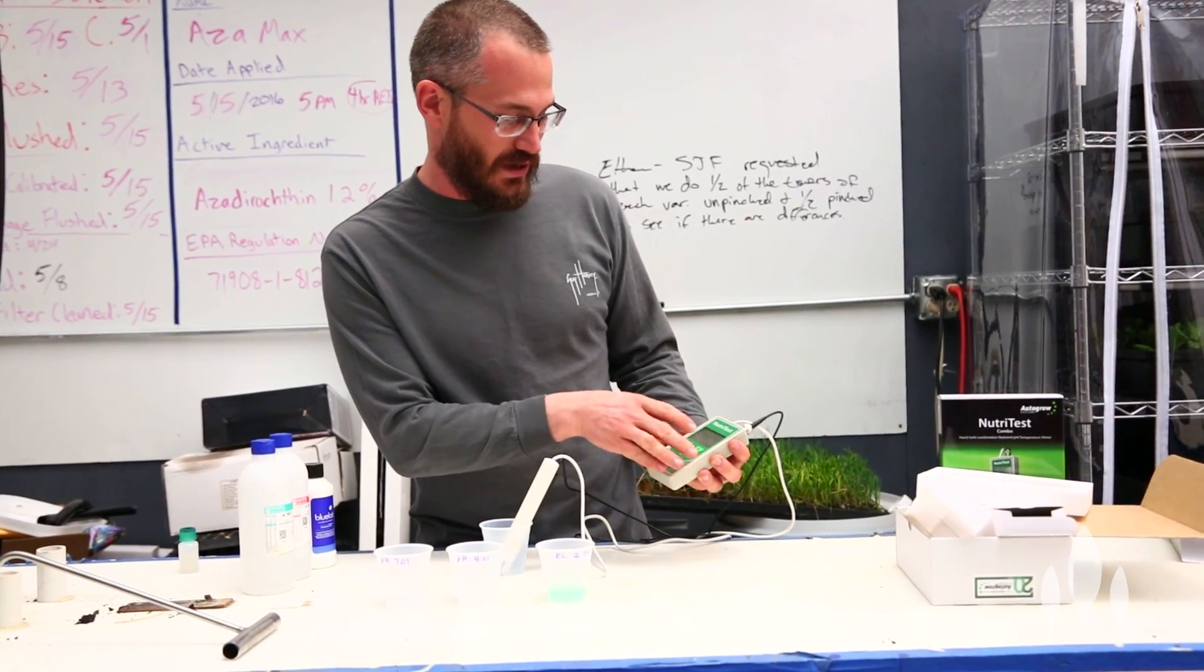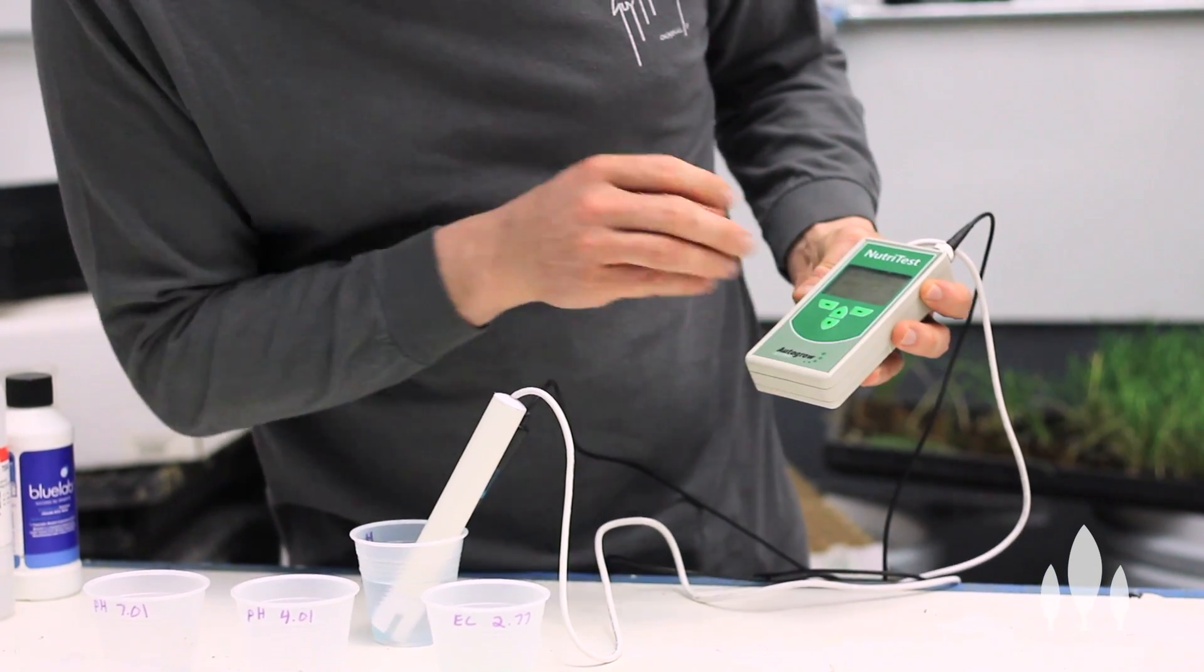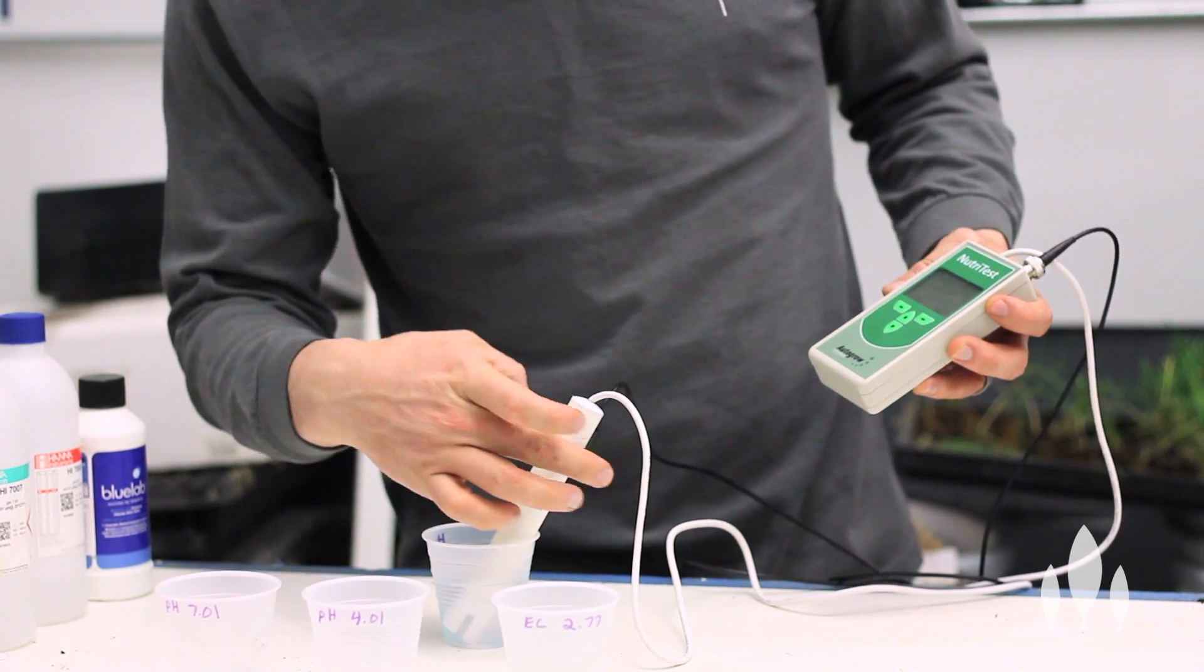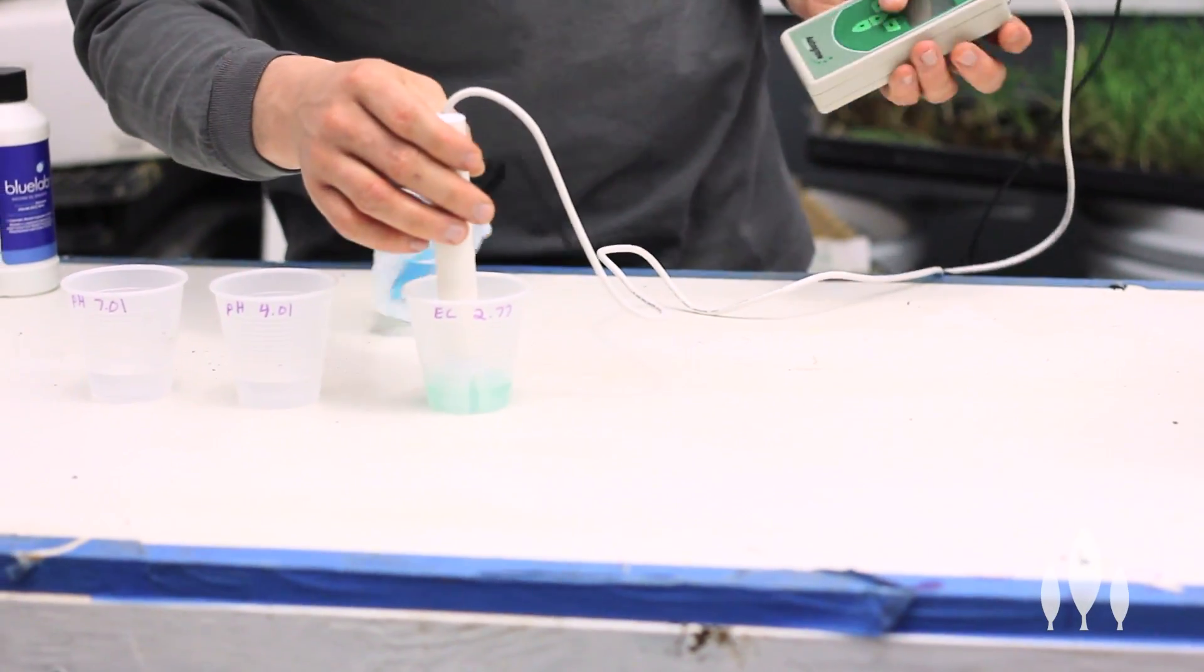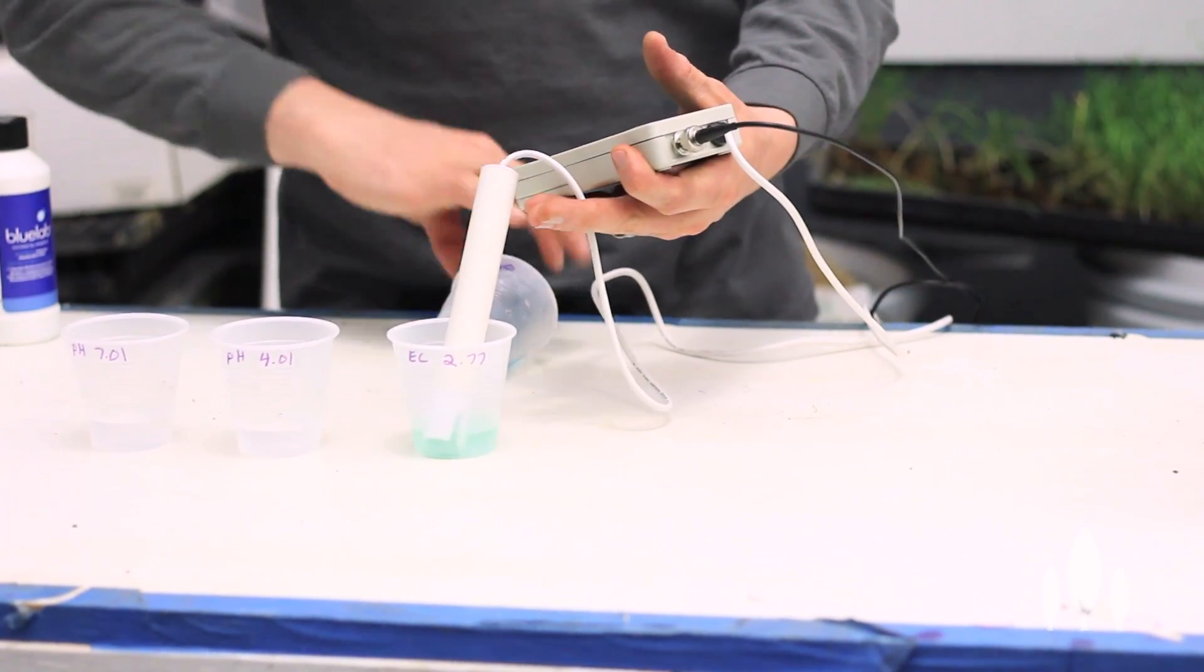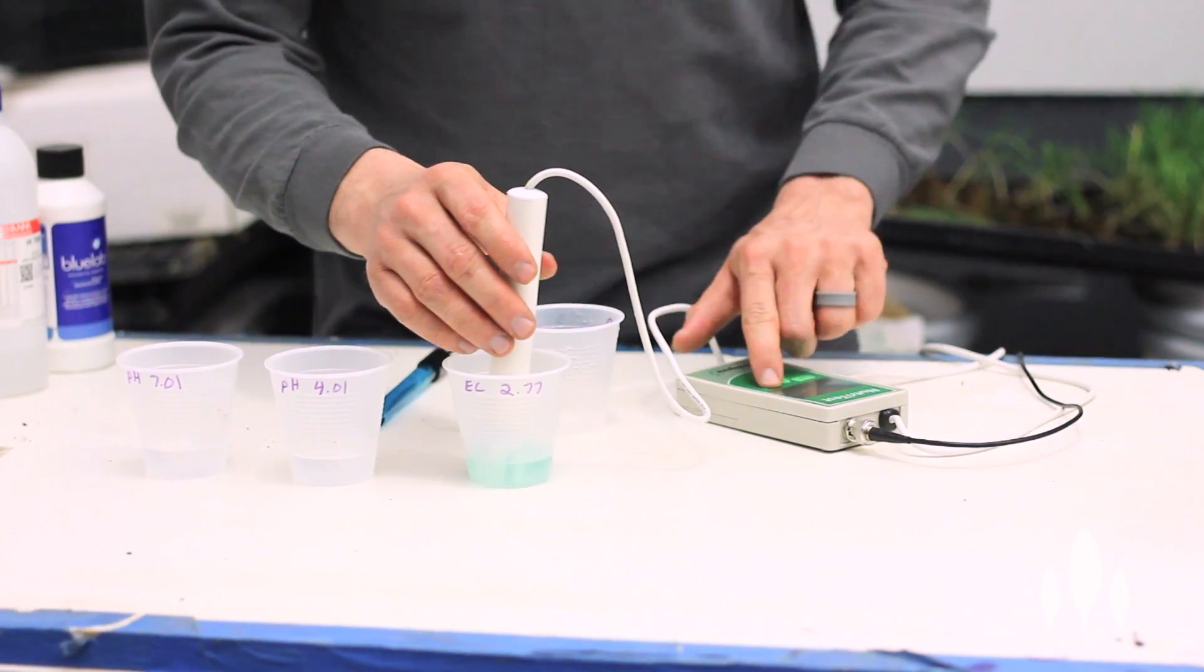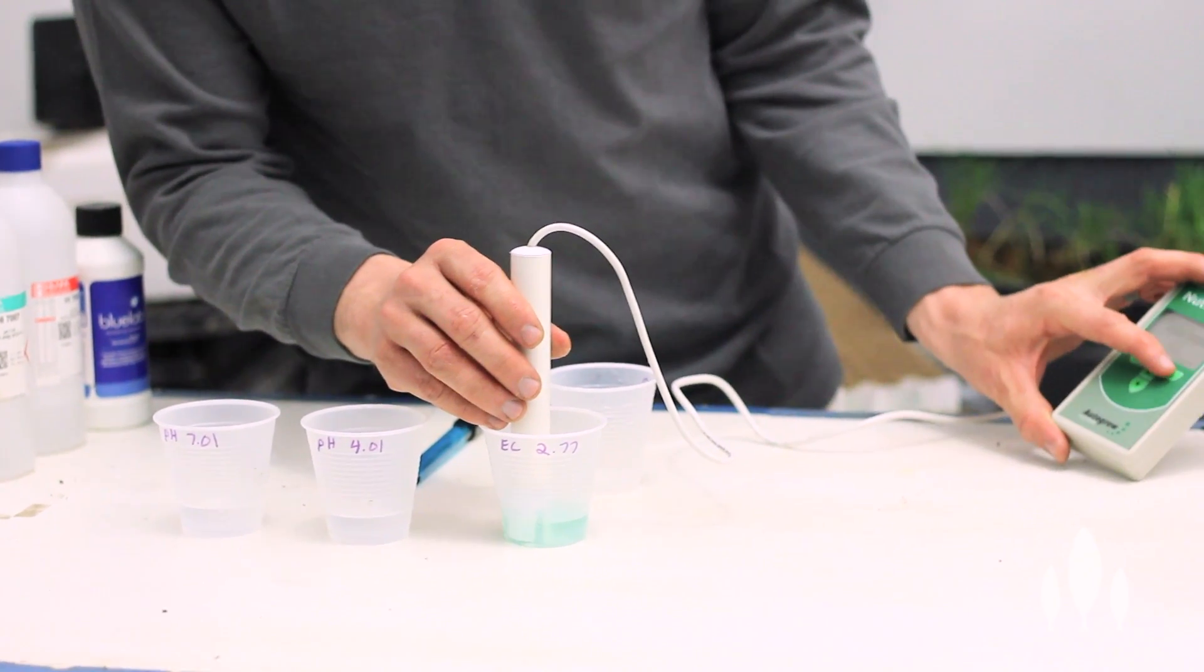So, to do this, we just hit menu, calibrate, we hit select, EC, select. It's going to say buffer, 2.77, press up, down. And so, we're going to basically take our little EC probe out here, and we're going to stick it in there. This is why I hate calibration. Chris? What did you put it in? I put it in an EC solution. So, this is a 2.77 solution of EC, and so it's in the buffer. Start calibration. We're just going to hit start.